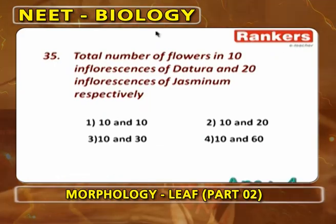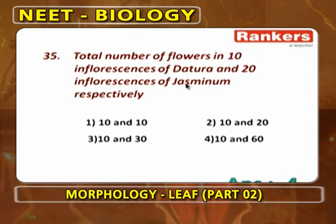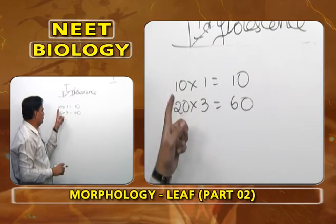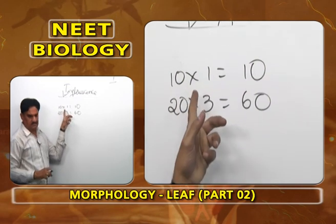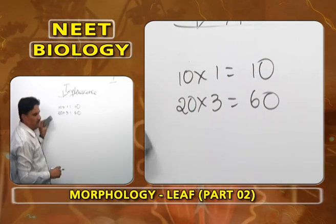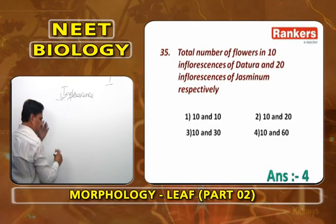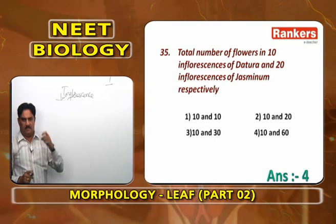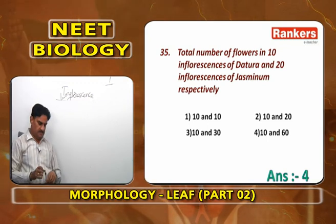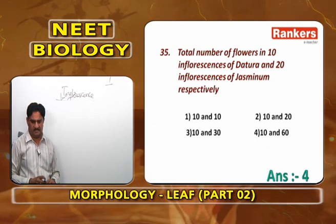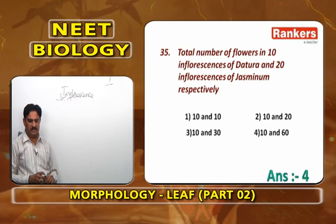Total number of flowers in 10 inflorescences of Datura and 20 inflorescences of Jasminum: Datura is solitary cyme — 10 × 1 = 10 flowers. Jasminum is simple cyme — peduncle ends as flower, two lateral branches develop and become flowers — 3 flowers per inflorescence. So 20 × 3 = 60. Answer: 10 and 60.